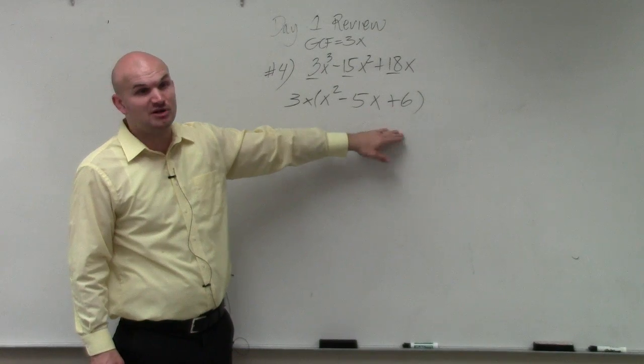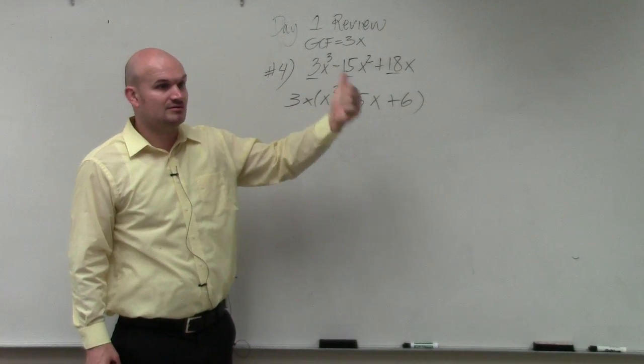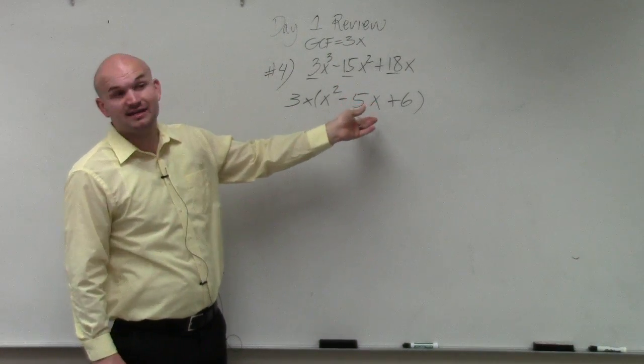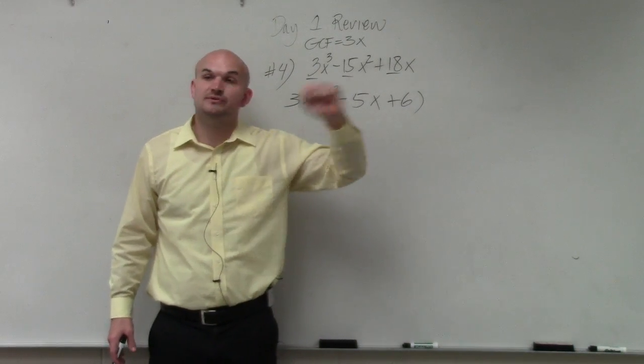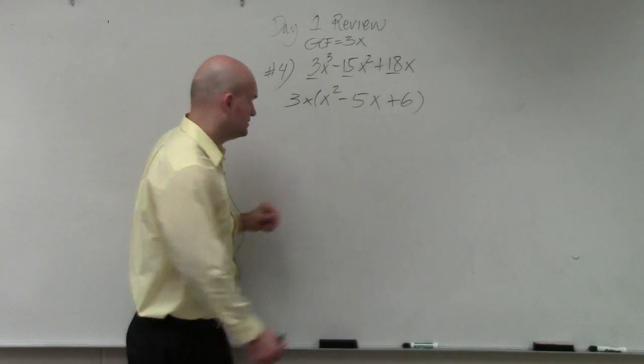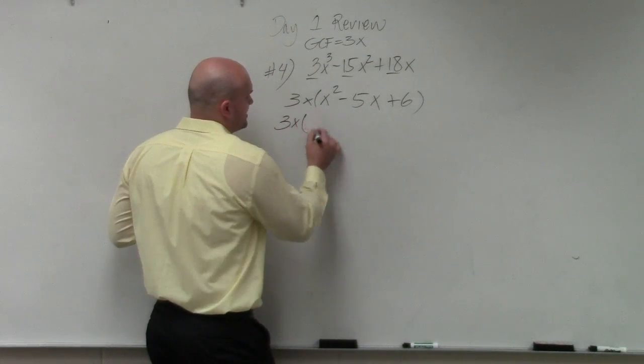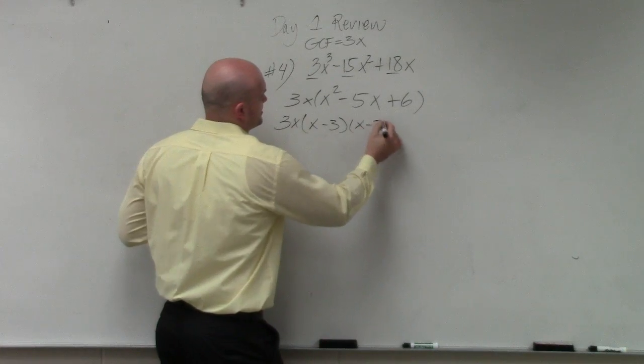There's only so many factors of 6: 6 and 1, or 2 and 3. However, they have to add to give you negative 5. So therefore, it's either negative 6 and negative 1, or negative 2 and negative 3. So my final answer is 3x times (x minus 3) times (x minus 2).